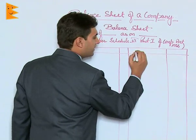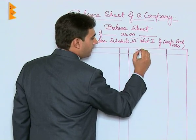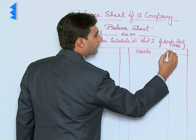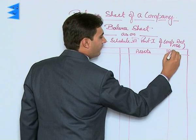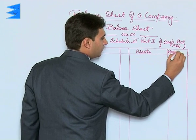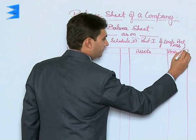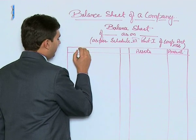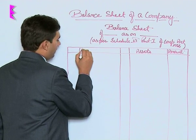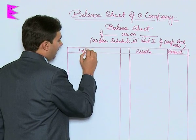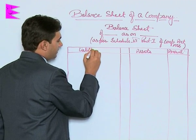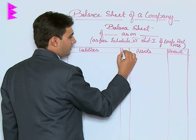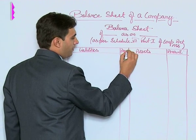The right-hand side is the asset side, where amounts are recorded. The left-hand side is the liabilities side, where amounts are also recorded.